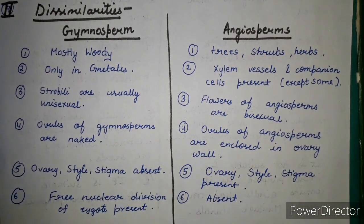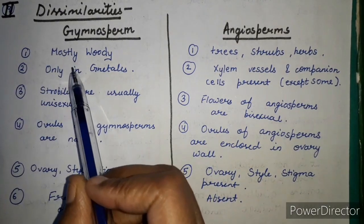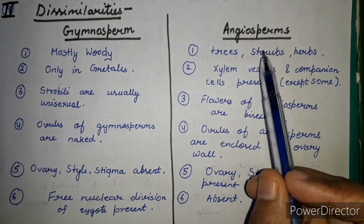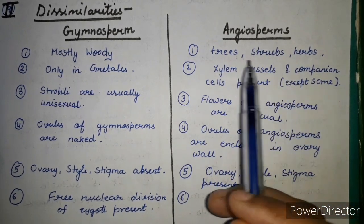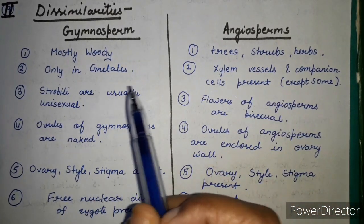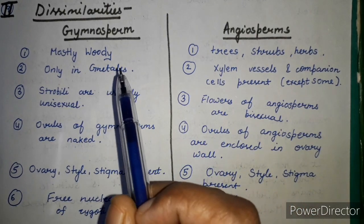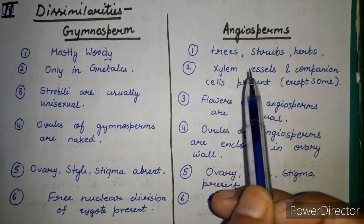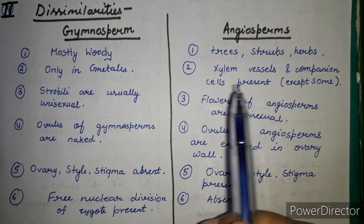Now the dissimilarities between gymnosperms and angiosperms: gymnosperms are mostly woody trees, whereas angiosperms occur as trees, shrubs, herbs, etc. In gymnosperms, xylem vessels are absent except in Gnetales (Ephedra), whereas in angiosperms, xylem vessels and companion cells are present.